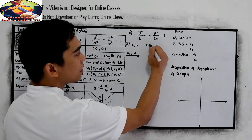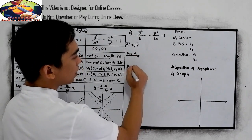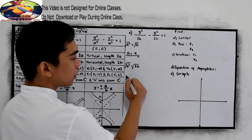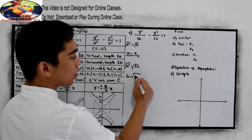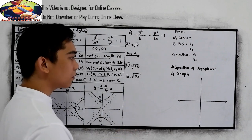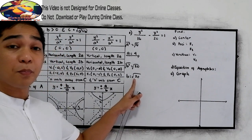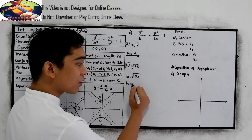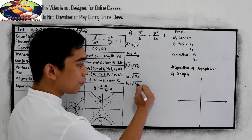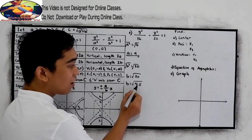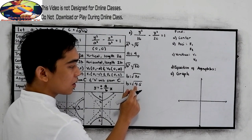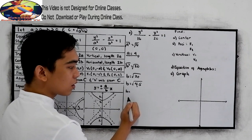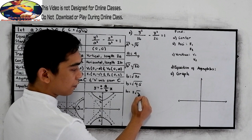For our b, b squared is equal to 20. Extract the square root: b is equal to square root of 20. Now, 20 is not a perfect square number. Get the factors of 20, that is 4 times 5. One factor must be a perfect square, which is 4. So b is equal to 2 square root of 5.